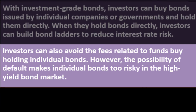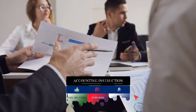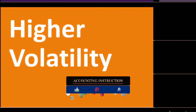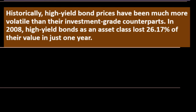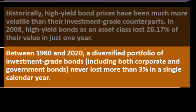Investors can also avoid fund fees by holding individual bonds; however, the possibility of default makes individual bonds too risky in the high yield market. Most regular investors seeking junk bond exposure are better served using mutual funds or ETFs. Regarding volatility: historically, high yield bond prices have been much more volatile than investment grade counterparts, which makes sense given the greater risk factors involved. In 2008, high yield bonds as an asset class lost 26.17% of their value in just one year.